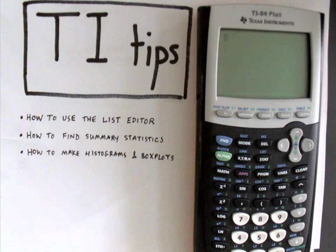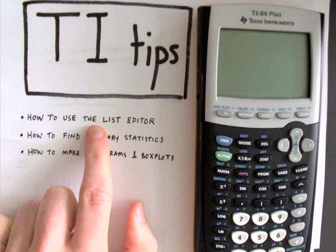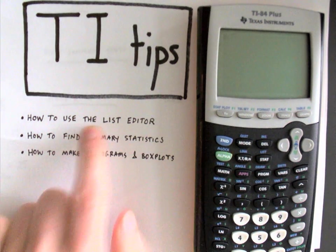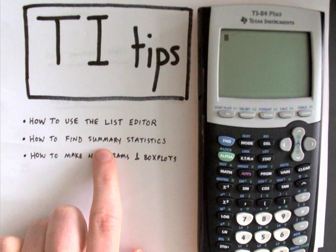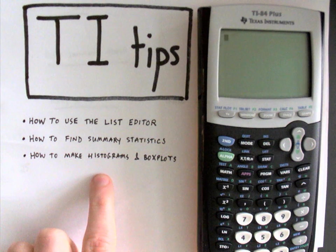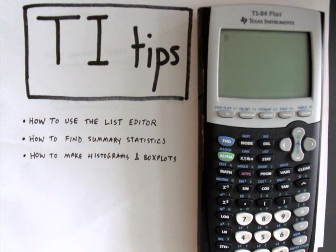All right in this video I'm going to go through some quick TI tips. I'm going to show you how to use the list editor to enter data in your calculator, how to find some basic summary statistics like the mean and the standard deviation, and lastly how to make histograms and box plots on your TI graphic calculator.